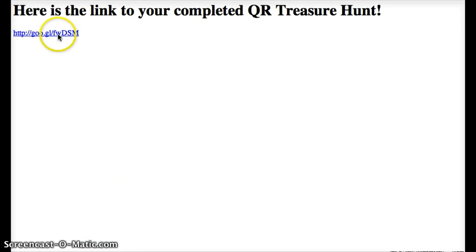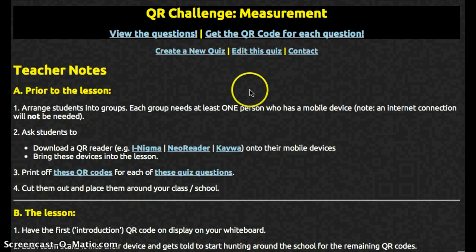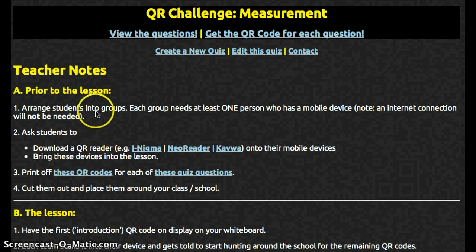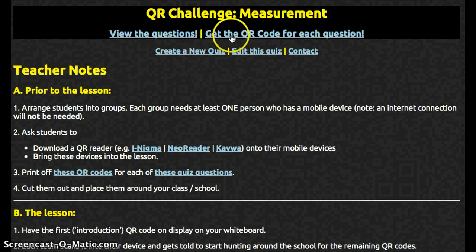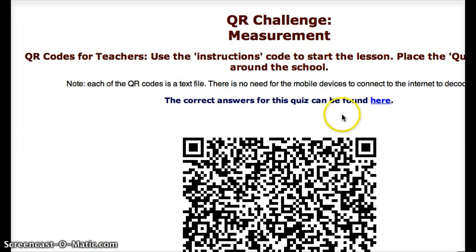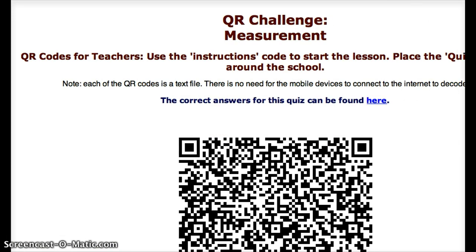Once I click create, I'm given a link to my completed QR code treasure hunt. When I click on my link it gives me some teacher directions that are very straightforward. Then I can choose to go edit this quiz if I'm having problems, I can view the questions, or I can get my QR codes. What I would probably do first is click here to be able to see my QR codes.